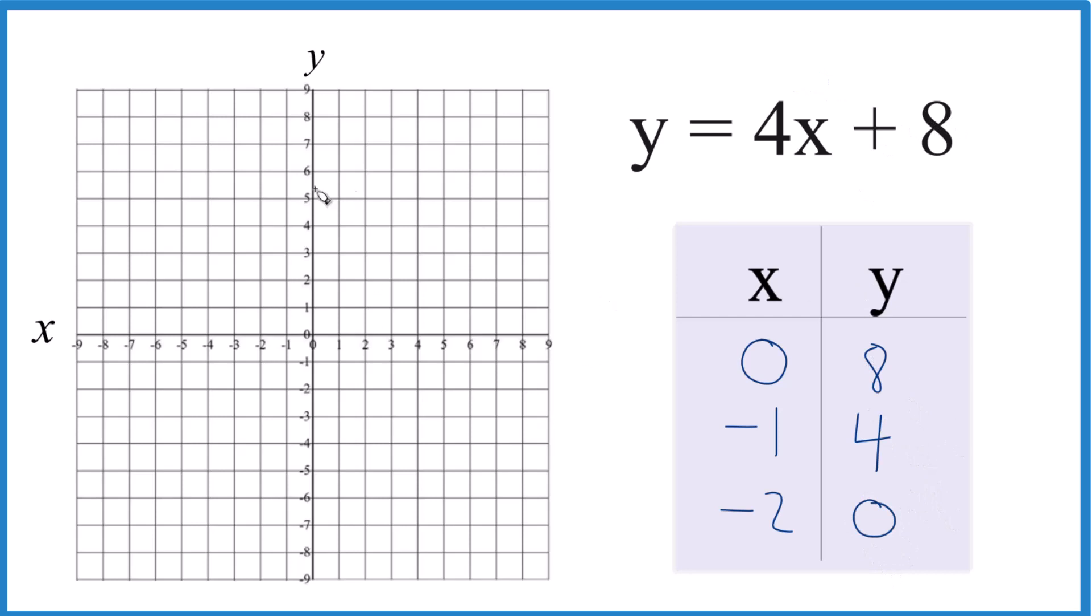Now I just graph these points. I could have chosen any values for x, and the value for y I would get, those would be on the graph, the line for y equals 4x plus 8. But these are a little easier to work with.